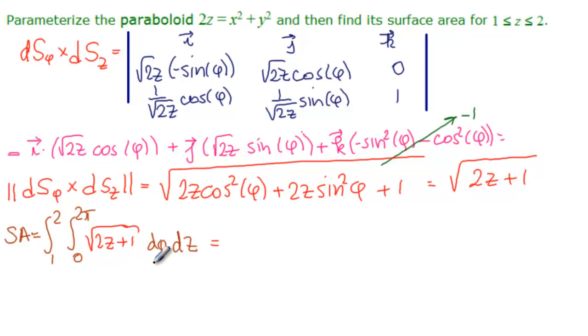And so we can do phi first because there is no variable. So we would get just the 2 pi in front from 1 to 2, square root of 2z plus 1 dz.